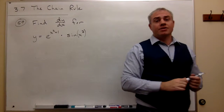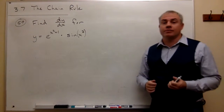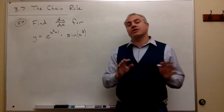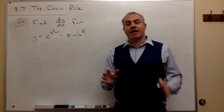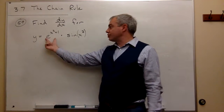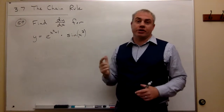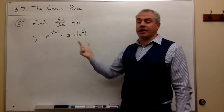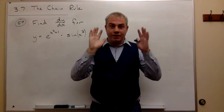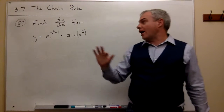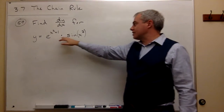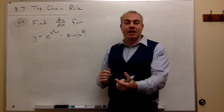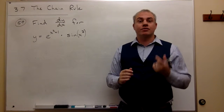When I look at this problem, this is the section on the chain rule. But when I look at this, I don't see a chain rule right off the bat. What I see is it's a function times a function — I have one thing multiplied by another thing. And without even thinking about how complicated these are individually, I know that if I have something times something else, then I have to use the product rule.